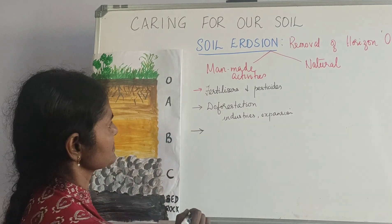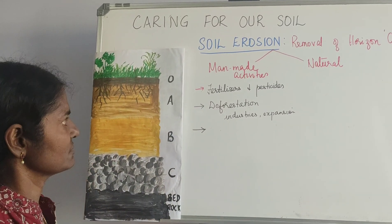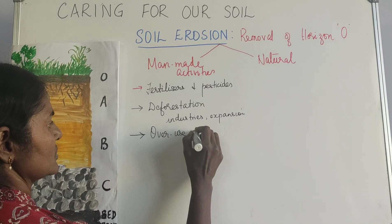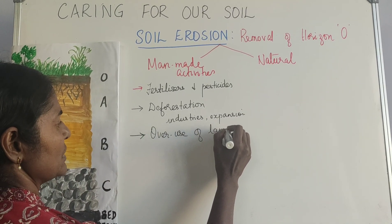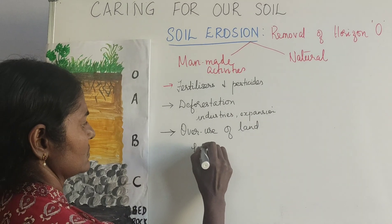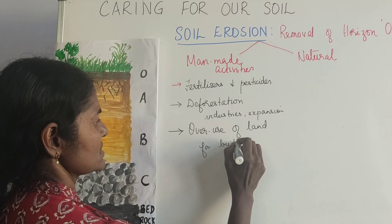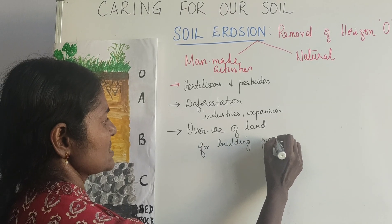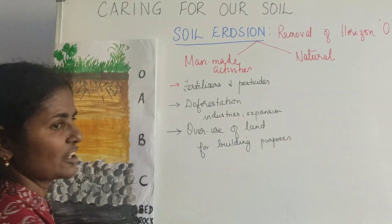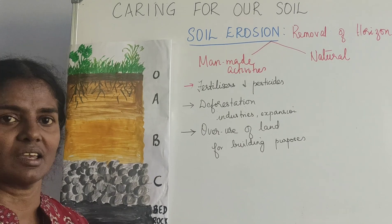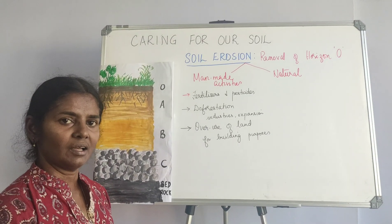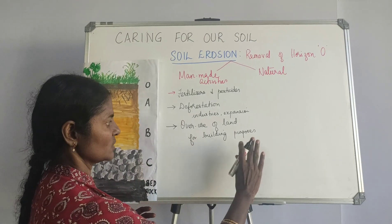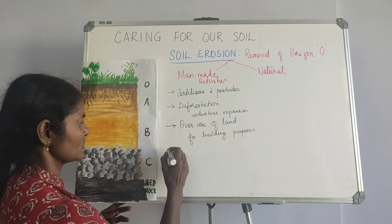The next activity is overuse of land, mainly for building purposes. This also results in soil erosion because when we start filling up — for example in Bangalore there were so many lakes, now everything is filled up and we have buildings — we miss out on the soil and it gets eroded.